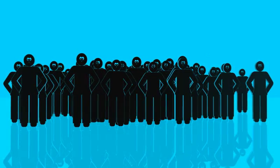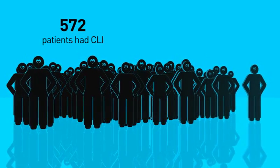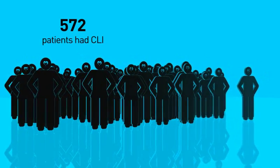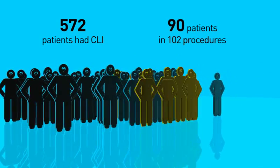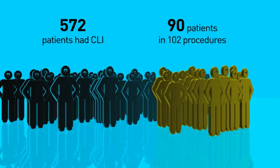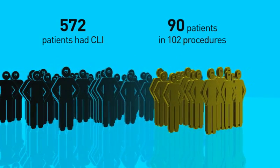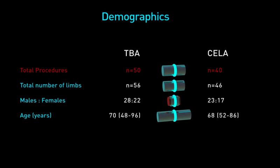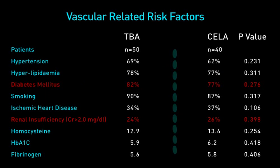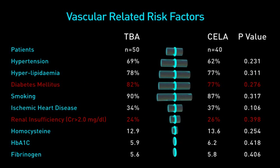Out of 572 patients diagnosed with CLI over a 5-year period, 90 patients underwent 102 tibial procedures on an emergency basis; all had TASC-D. We had more repeated procedures for tibial angioplasty than in the laser group. 80% of all our patients were diabetic and one fourth had chronic renal insufficiency.